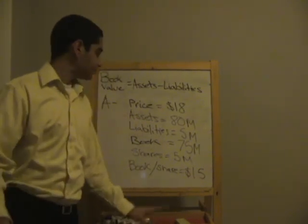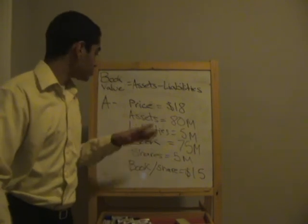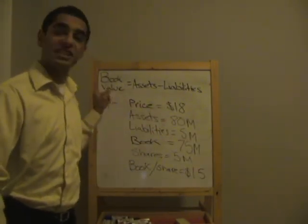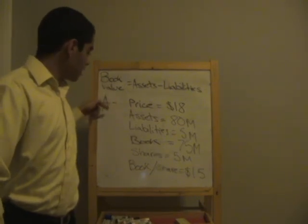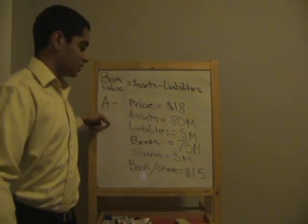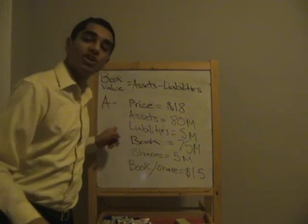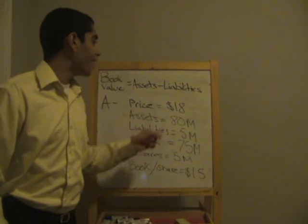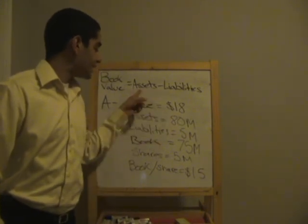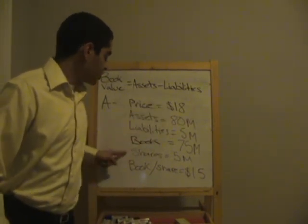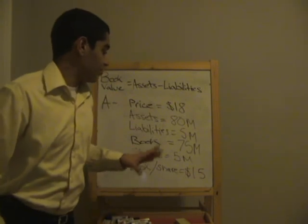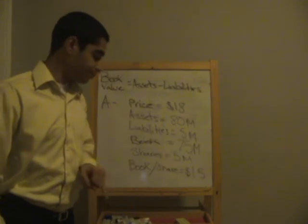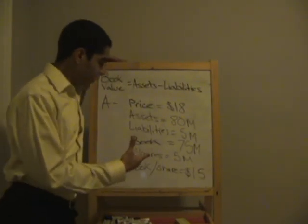A lot of you may be wondering where you can get this information. On Google Finance — the website I like to use — when you go to a company's page, on the left it'll say you're on Summary. Go down a little and you'll find Financials. From Financials, go to the Balance Sheet. The balance sheet is where you can find information like assets, liabilities, and shares. You'll have to calculate the book value on your own using this simple formula.